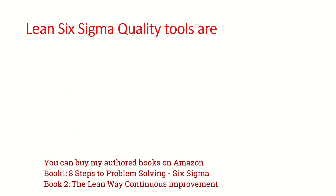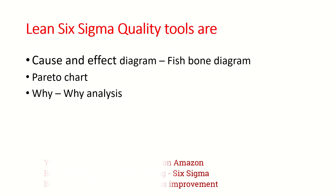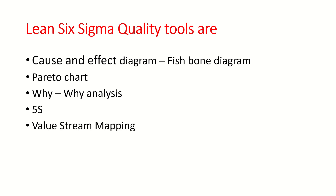Some of these Lean Six Sigma quality tools are: first, cause and effect diagram, also known as fishbone diagram; second, Pareto chart; third, 5Y analysis; fourth, 5S; fifth, value stream mapping; sixth, regression analysis; and seventh, FMEA, also known as failure mode and effect analysis.